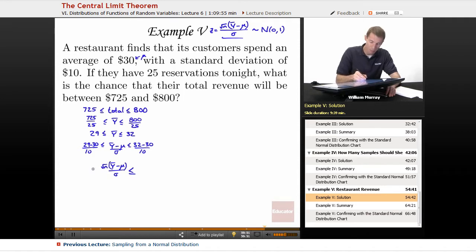Y bar minus mu over sigma times the square root of n. This is not absolute value, this is not one of those within problems like the previous one. So I have to be careful about what's positive, what's negative, no absolute values here. The square root of n, n is 25, that's the number of customers we're going to be working with tonight. So the square root of n is 5. 5 times 29 minus 30 over 10, and 5 times 32 minus 30 over 10. And that simplifies fairly nicely. 5 over 10 is 1 half. 1 half times negative 1 is negative 1 half, so negative 0.5.